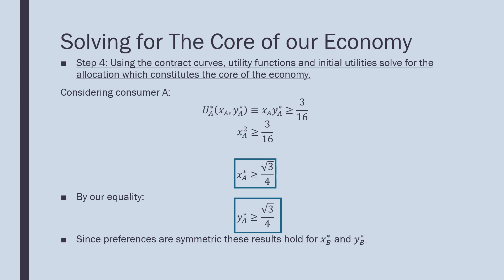Step 4: use our contract curves, utility function, and initial utilities to solve for the allocation which constitutes the core of our economy. Considering consumer A, we have xa times ya at its optimum—this is our optimum as determined by our contract curve. This must be greater than or equal to our consumption from initial endowment, which is a necessary condition for defining these points.